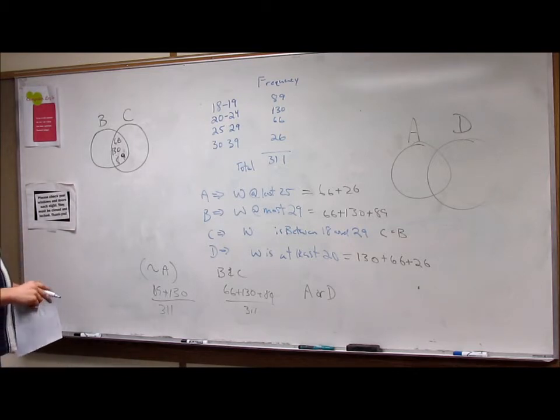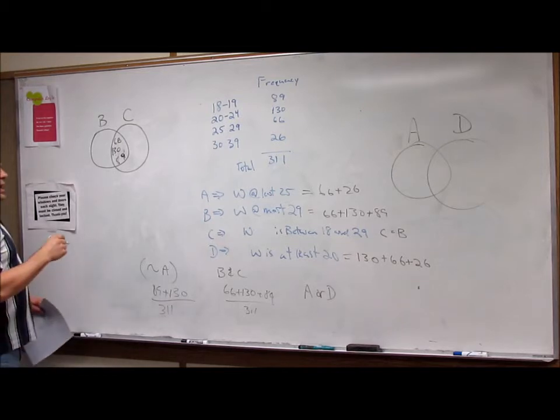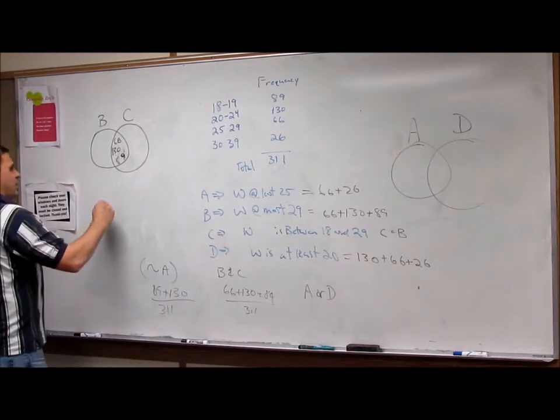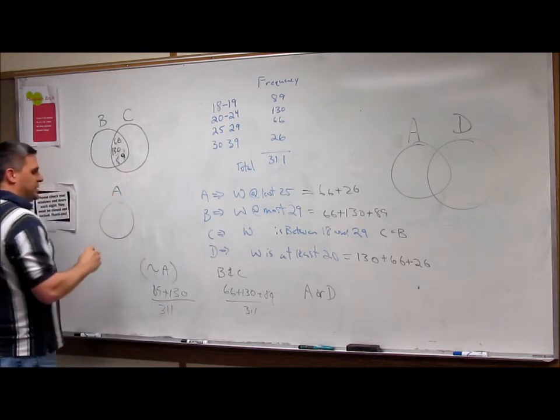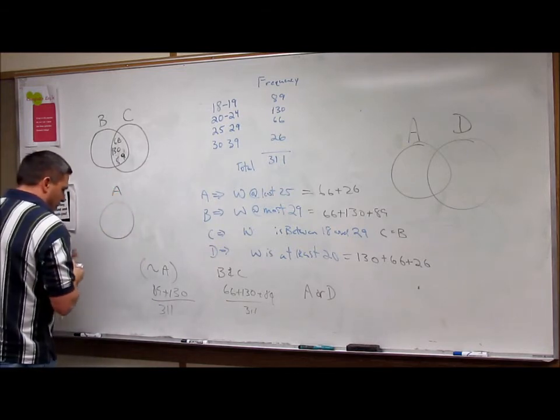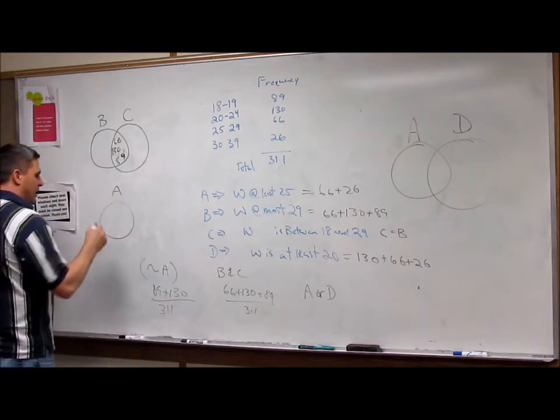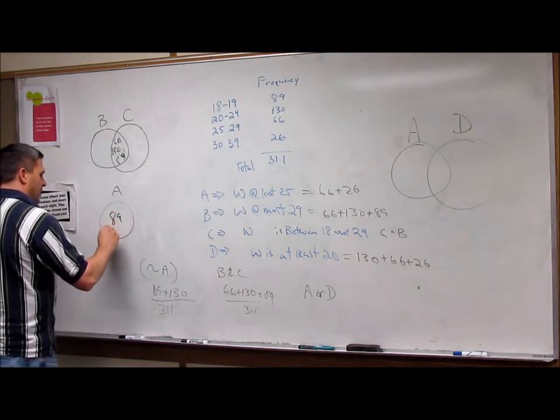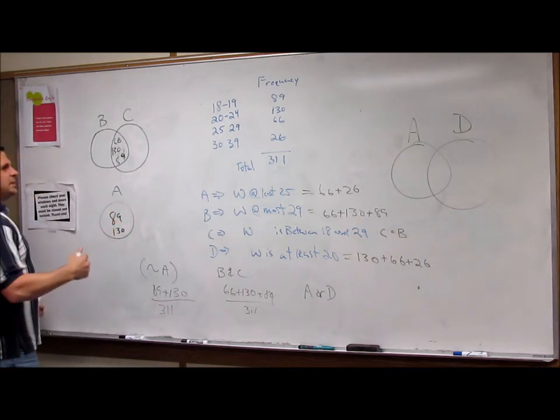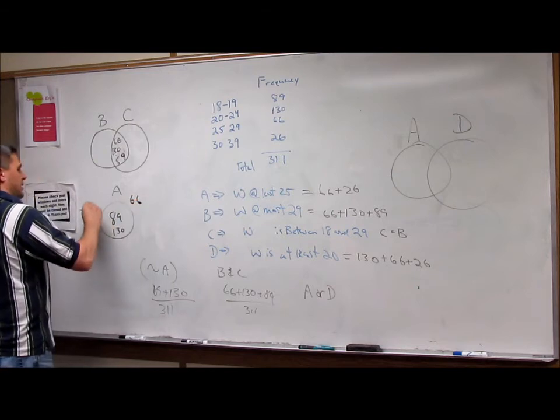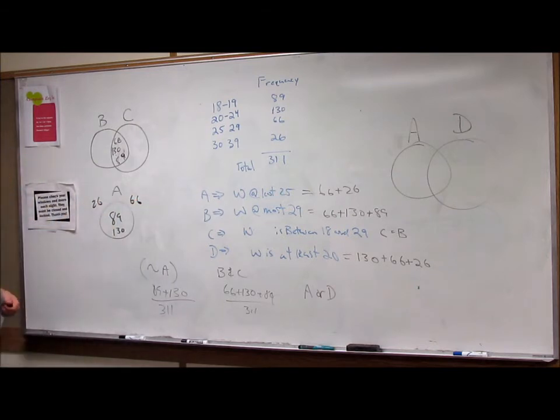So but when we're talking about, say, not A, right? So now we have A. What's in A? Well, we had 89 and 130. But what wasn't in it was 66 and 26. So they're outside of it.